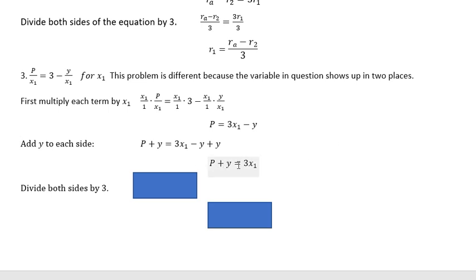And then you have what's left is P plus Y is 3X subscript 1. I want to isolate that X sub 1. So I'm going to divide both sides by 3. If I put them both over 3, you can see that the 3 over 3 cancels over here on the right. And then flipping that around, I have X sub 1 equals P plus Y over 3.